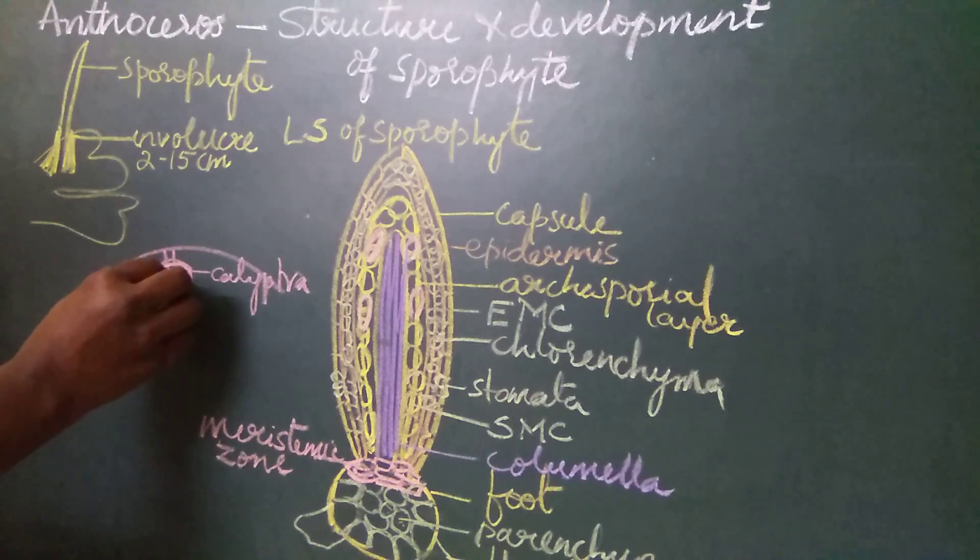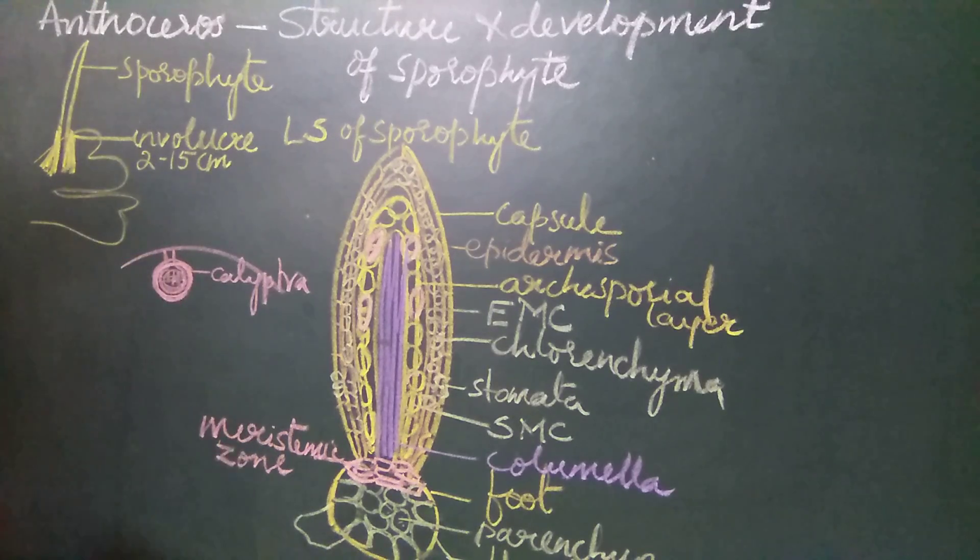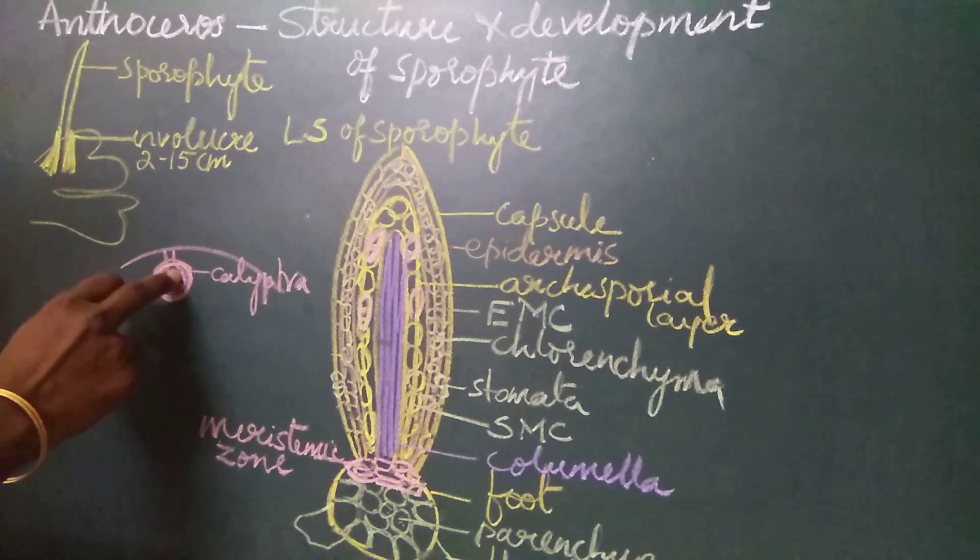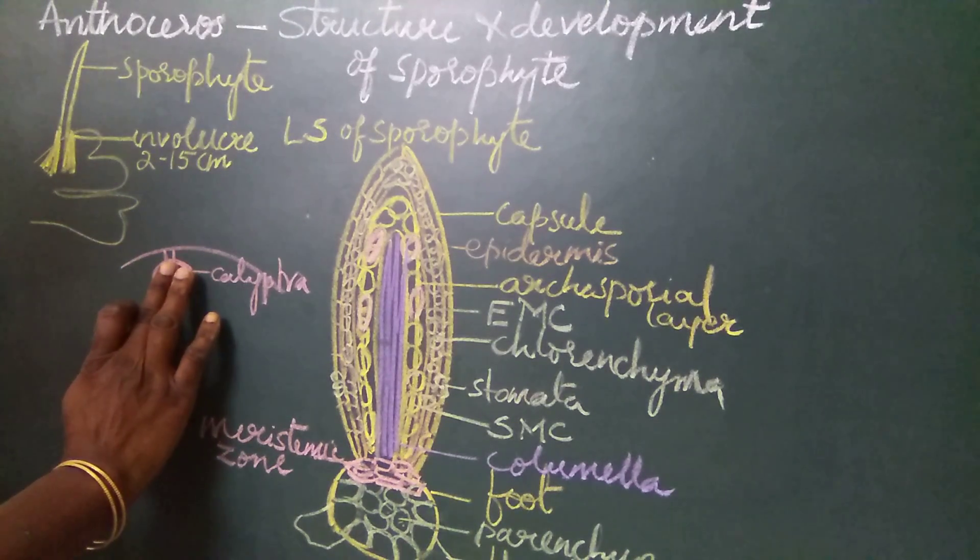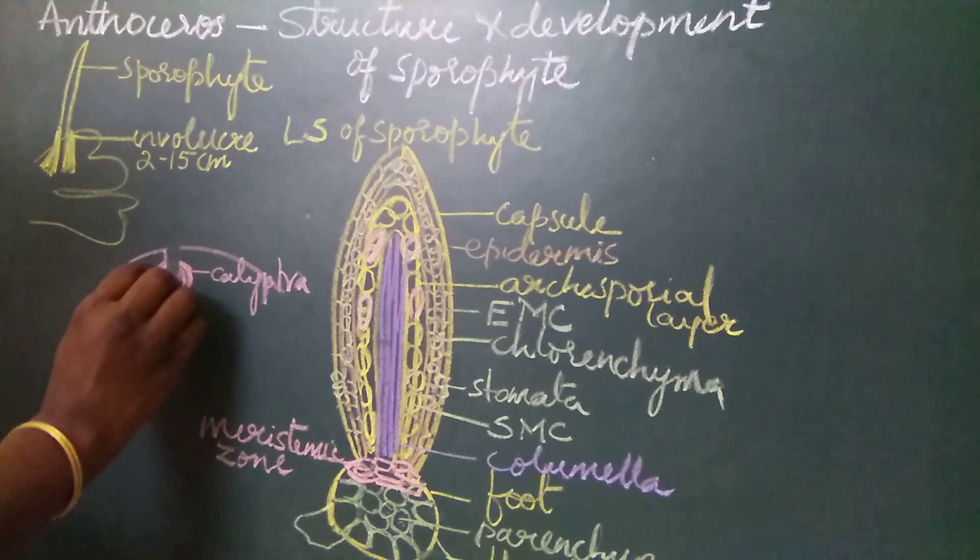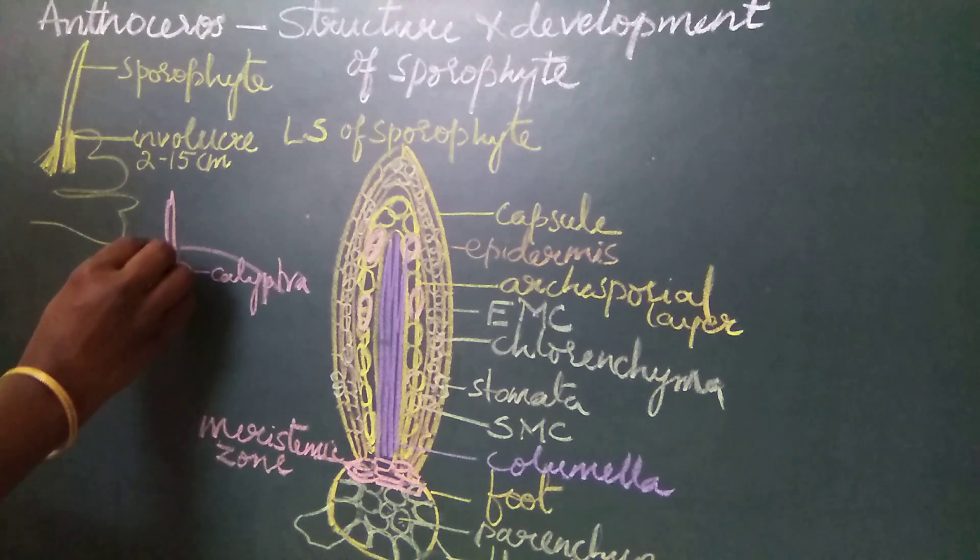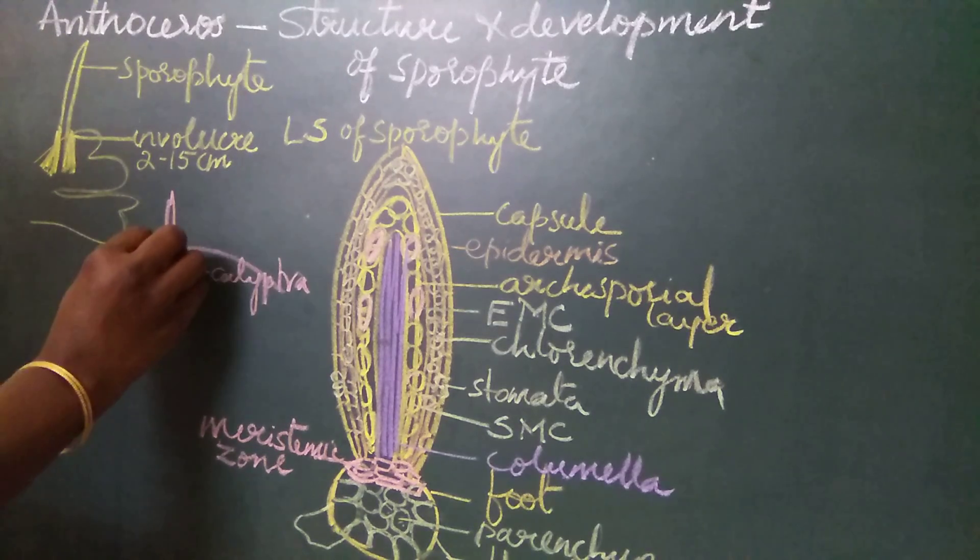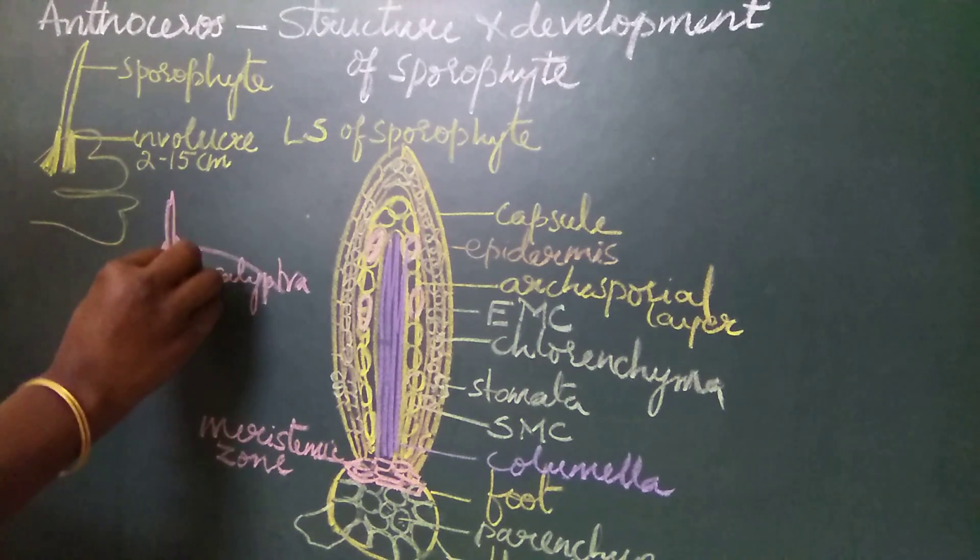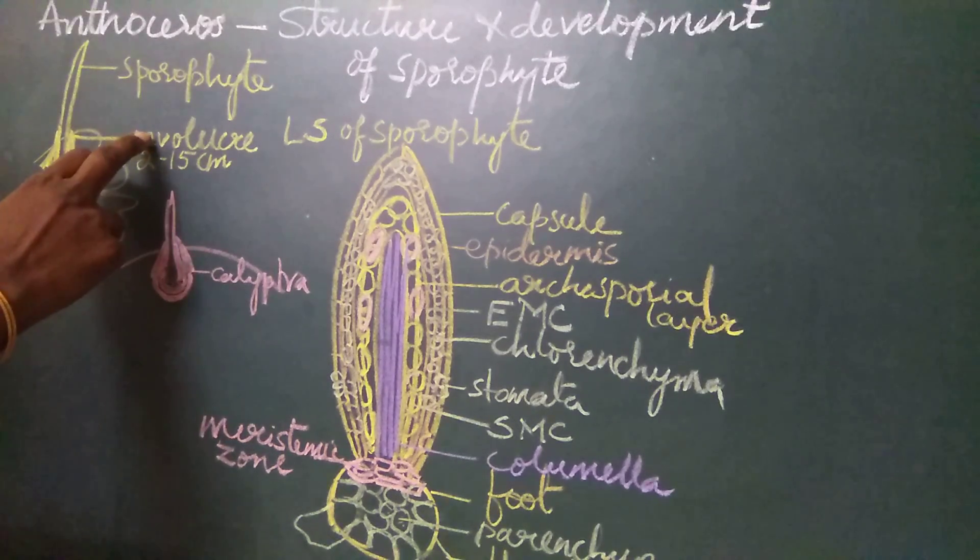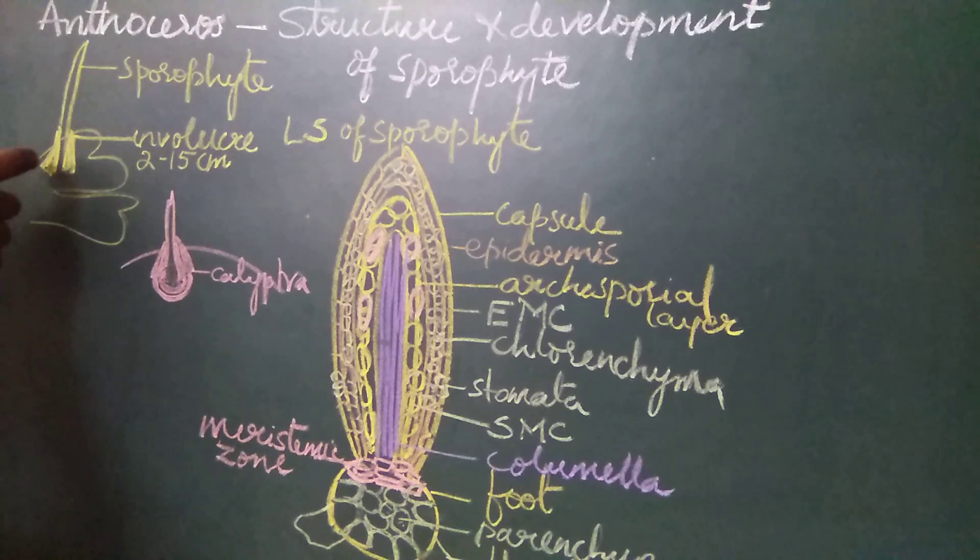Initially, the zygote starts dividing inside the calyptra, and the calyptra surrounds the zygote. As the zygote increases in size—that is, as the sporophyte develops further—it pierces the calyptra region and emerges out. The calyptra remains as a collar-like structure at the base of the sporophyte, called the involucre.